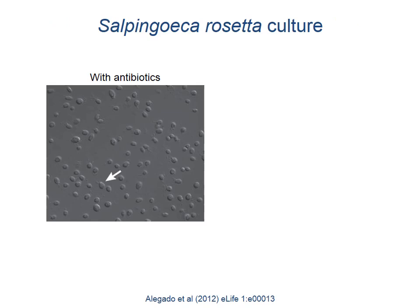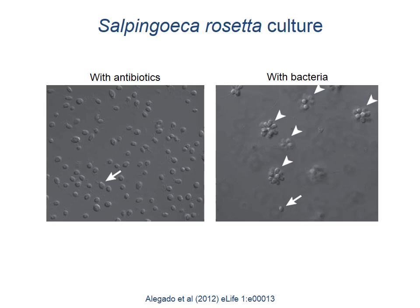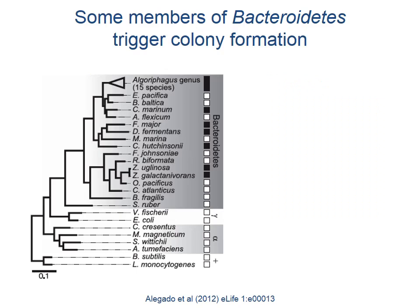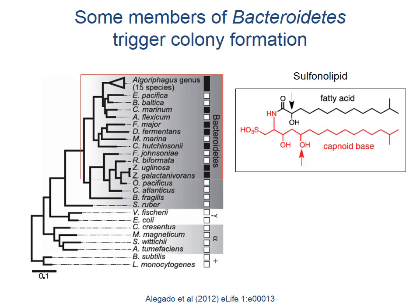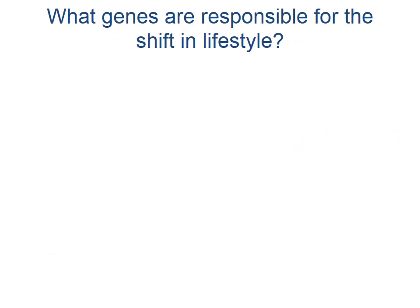To answer this question, we look to Salpingoeca rosetta, another choanoflagellate species able to form rosette colonies in the presence of specific bacteria. Certain species of Bacteroidetes can trigger colony formation in Salpingoeca rosetta, and isolation of the compound responsible reveals it to be a sulfonolipid. This is an example of how bacteria or bacterial compounds can trigger eukaryotic morphogenesis, suggesting molecular mechanisms through which bacteria may have contributed to the evolution of animals.